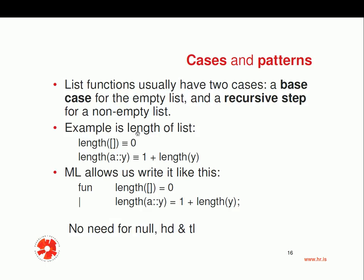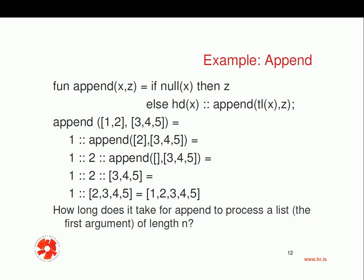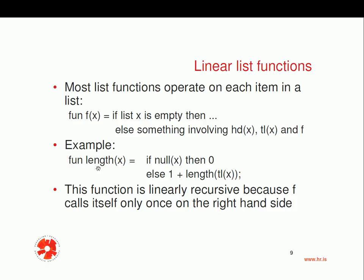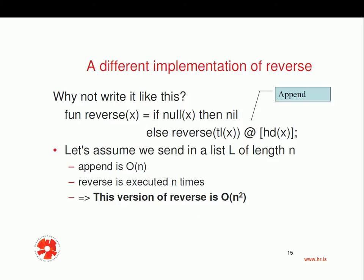We saw earlier in ML that the length of the empty list is zero, and the recursive step is that if the list is not empty, we can use the cons pattern to break it up into the head and the tail. The length of such a list is one plus the length of the tail. We wrote it using null of x, returning zero if null, else one plus length of the tail.